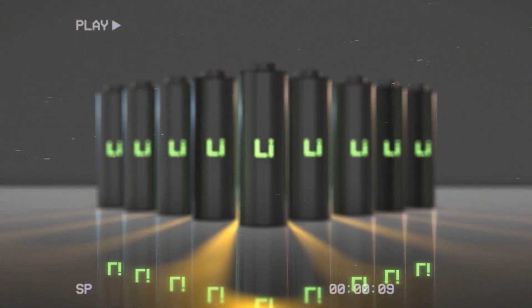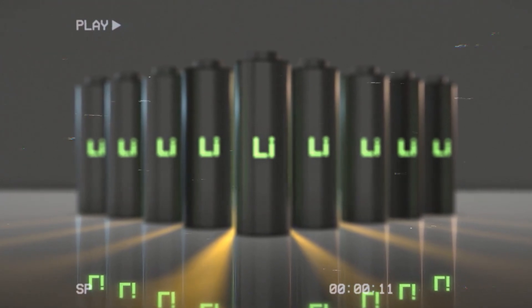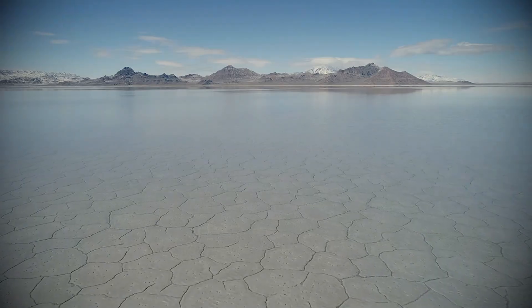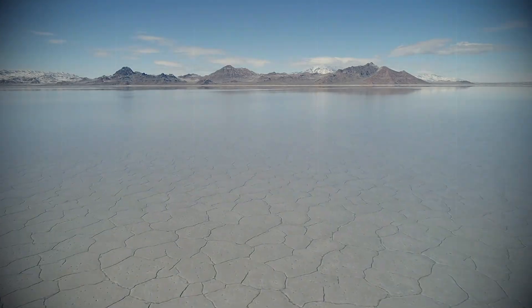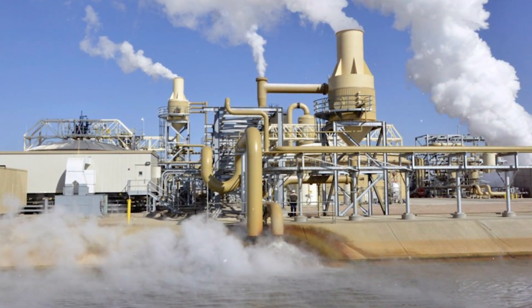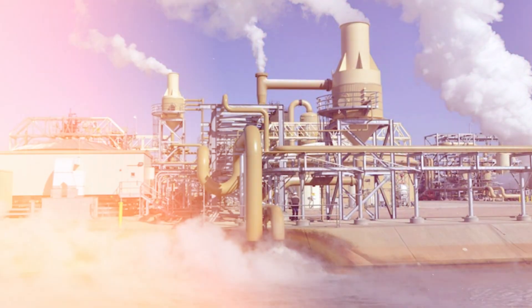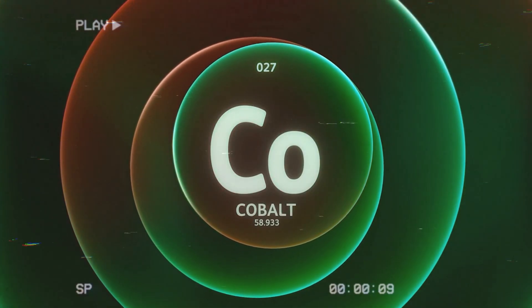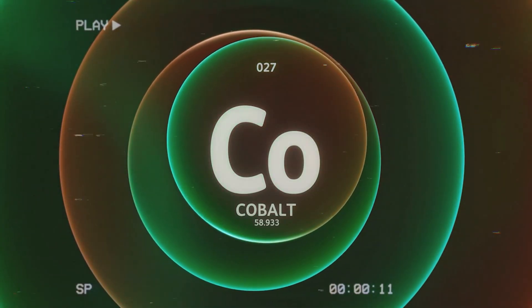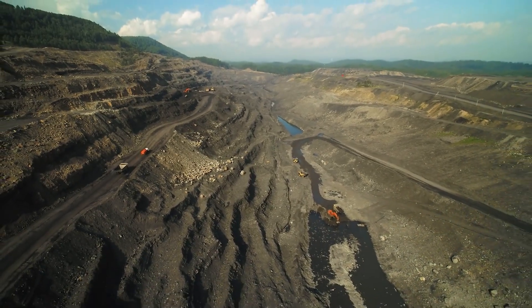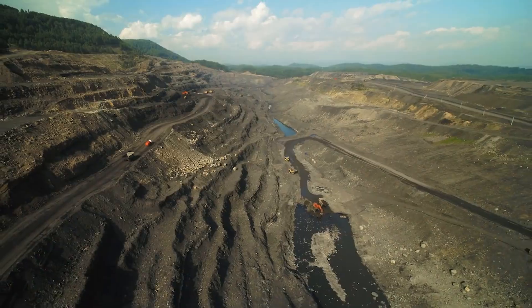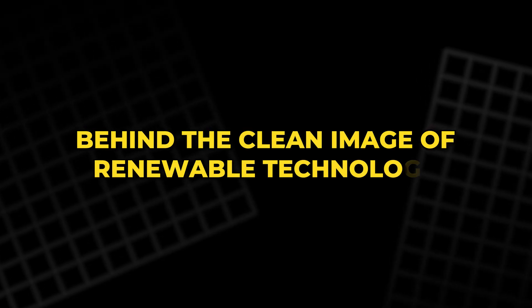Every lithium-ion battery also carries a hidden human and environmental cost. Extracting lithium consumes vast amounts of water, often in regions where water is scarce. Landscapes are altered and communities are affected. Cobalt, another vital ingredient, comes largely from the Democratic Republic of Congo. Mining there is dangerous, with reports of exploitation and child labor. Behind the clean image of renewable technology lies a harsher reality of supply chains marked by struggle and inequity.